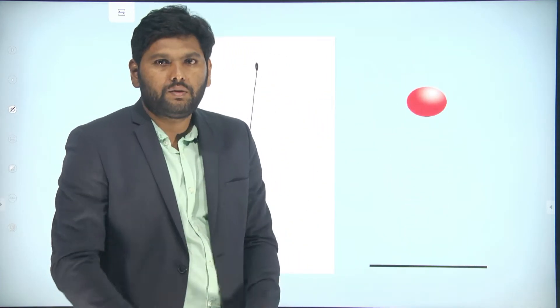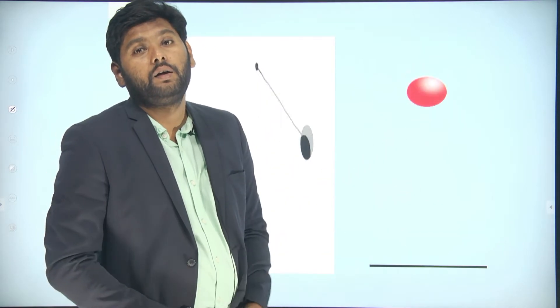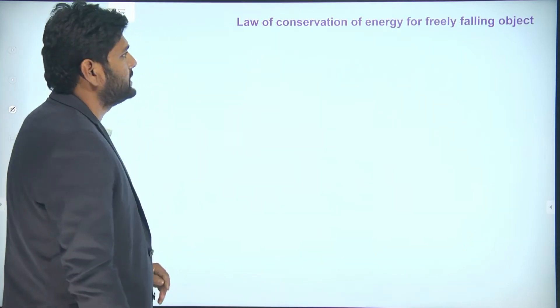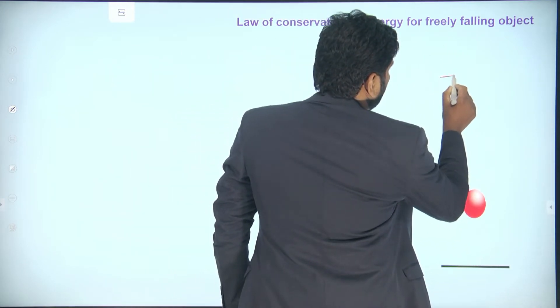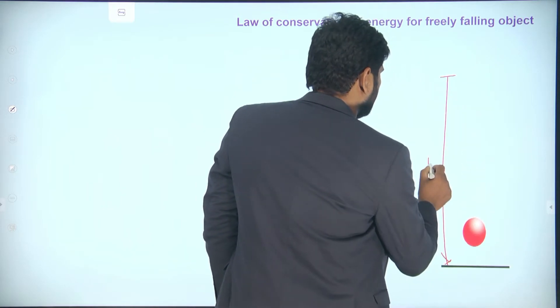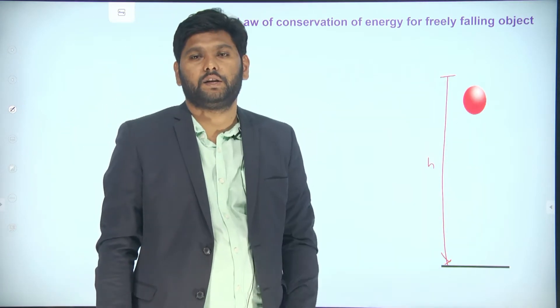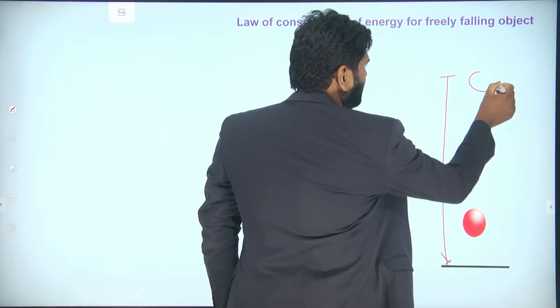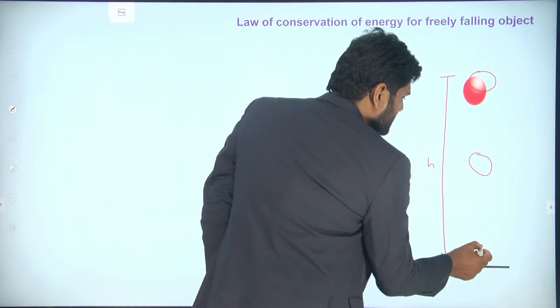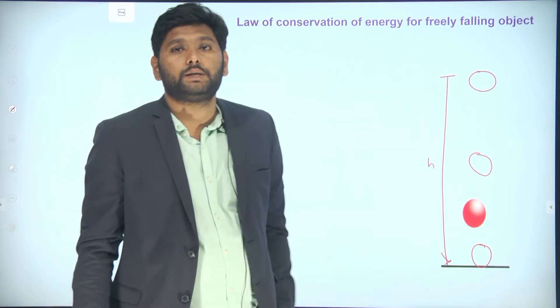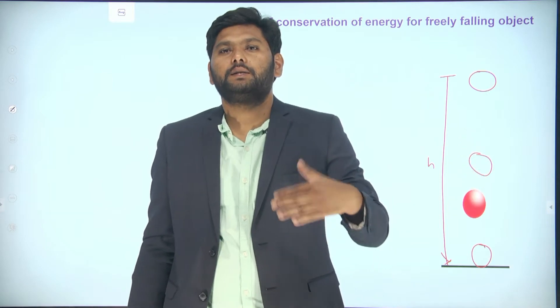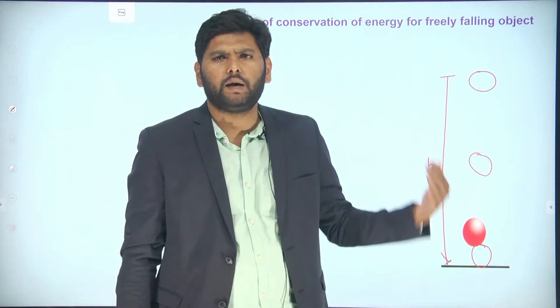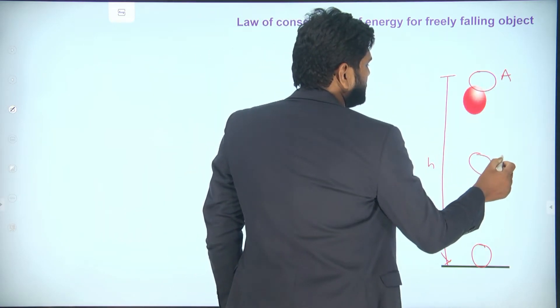In the case of a freely falling body also, we can conserve the energy. Our intention now is to conserve the energy for a freely falling body. So, this is the conservation of energy for a freely falling body. Let me take that this object is falling from a certain height h. Let me take the first position of the object as A, the second position as B, and the third position as C. In these three positions, we have to see the total energy — if it is the same, we can say the total energy is conserved.